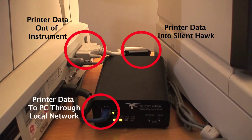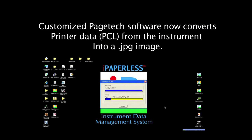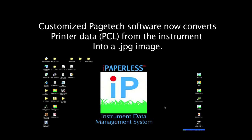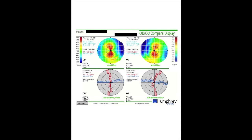Then our automated multi-instrument interface software, known as AMI, finds the patient ID with character recognition software. The image is then swept into iMacam by the iPaperless robot monitoring software.